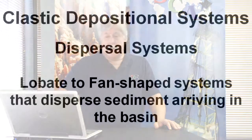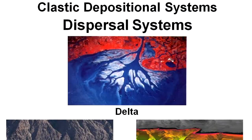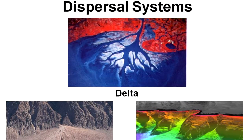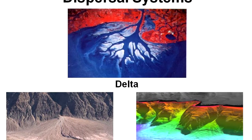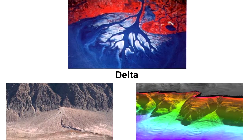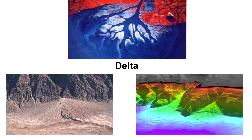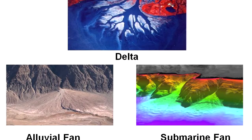Looking at dispersal systems — those are lobate to fan-shaped systems that disperse sediments arriving in the basin. And there are three types of dispersal systems: deltas, alluvial fans, and submarine fans.